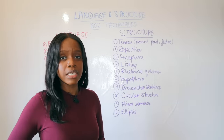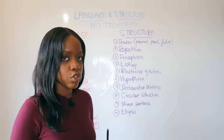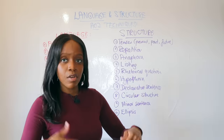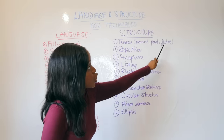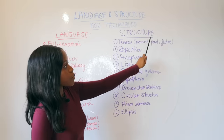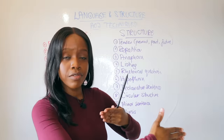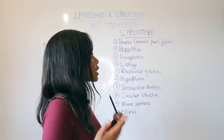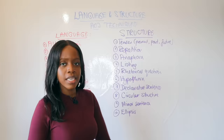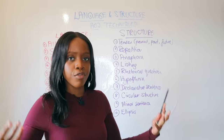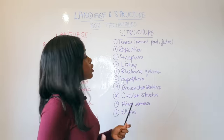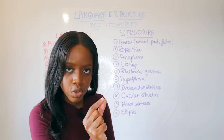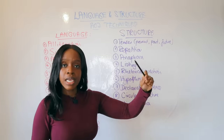If you forget everything else, remember those 10 language techniques. Now let's talk about structure. The first structural technique is the use of tense — and sometimes writers shift between all three: present, past, and future. If there's a shift, that itself is a powerful structural technique. The second is repetition — the same phrase or word used over and over again. The third structural technique is anaphora, where one subject is constantly repeated and referred back to within the text.